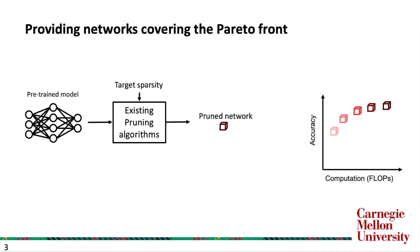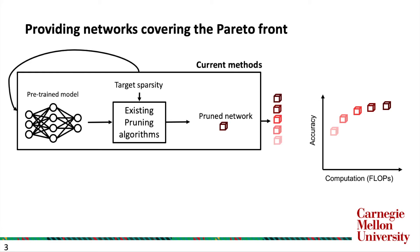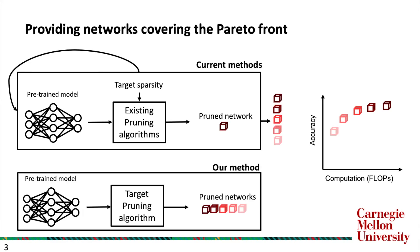However, existing filter pruning algorithms are parameterized to search for pruned networks given a target constraint. Thus, to obtain the Pareto front using them requires running the costly algorithms iteratively. Our goal is to develop a filter pruning algorithm that can produce multiple pruned networks cheaply in one shot.